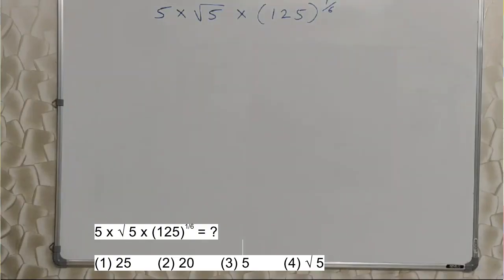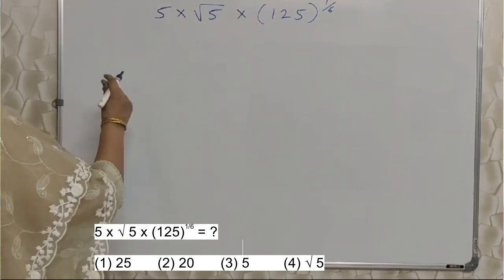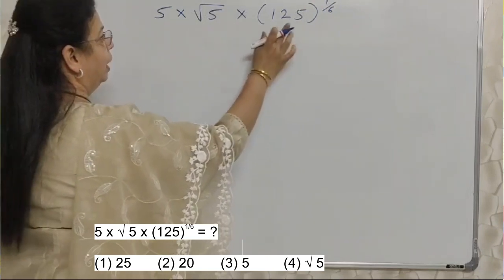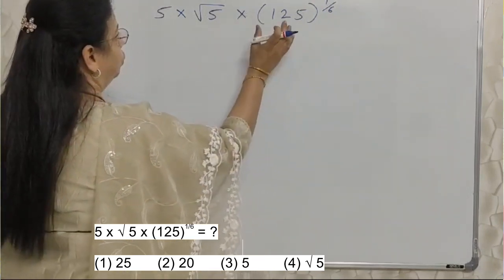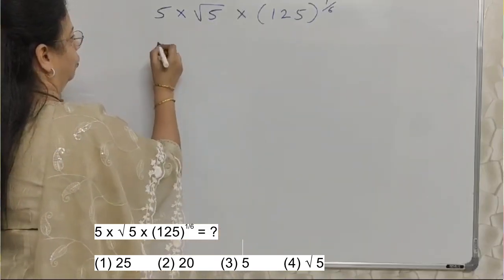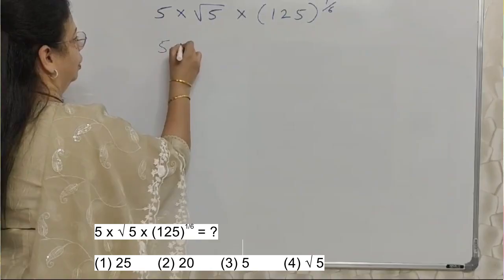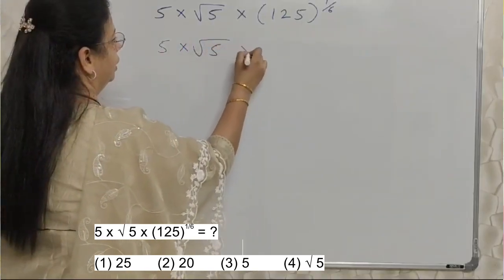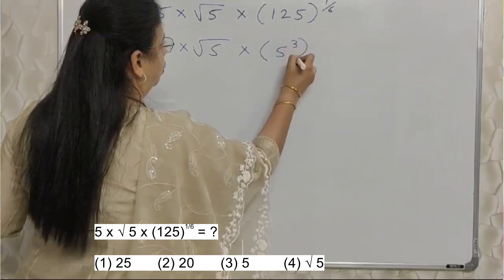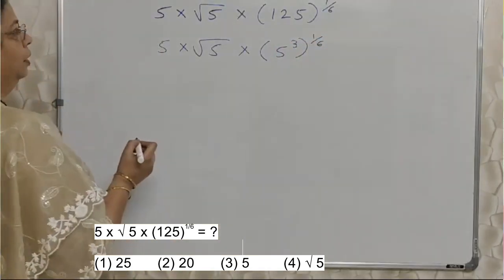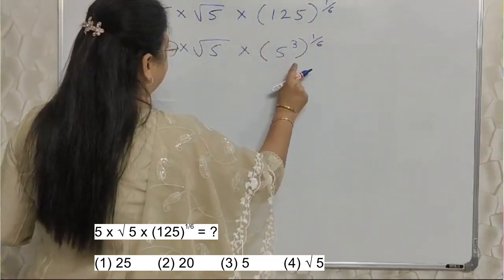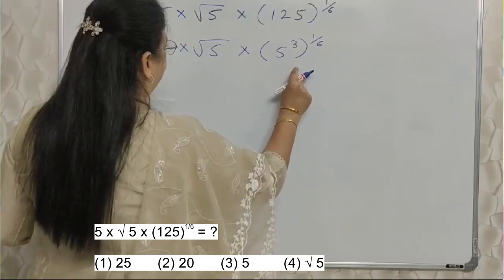The first sum I have already written on the board. Whenever you see something like this, your job is to reduce the bigger number to the base of the smallest number. I am writing it as it is. Now 125 I will write as 5 cubed. 1 upon 6 stays as it is. Now here the concept of indices will play a very very important role.